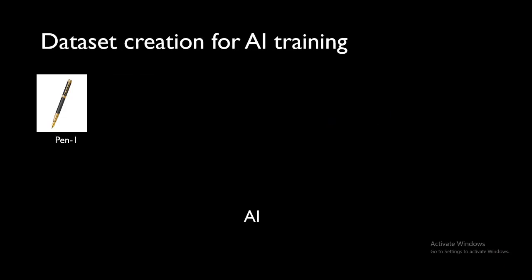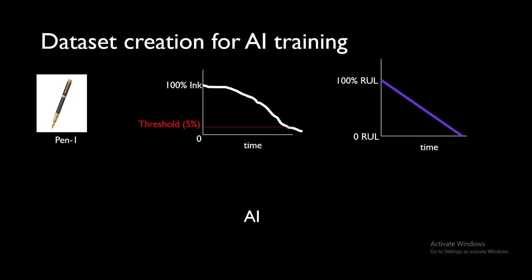The takeaway from this slide is that various different pens will have different remaining useful life plots or curves. Now we'll see how we can create a dataset to train the AI. For that example, let's first focus on a single pen. First we'll get the degradation data of remaining ink versus time and convert that into remaining useful life versus time plot.